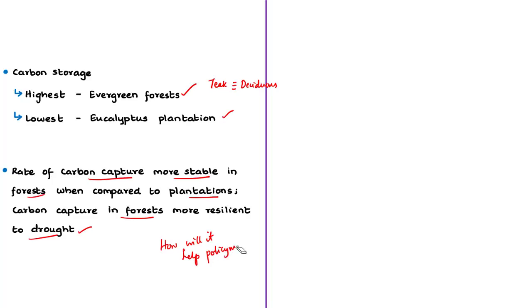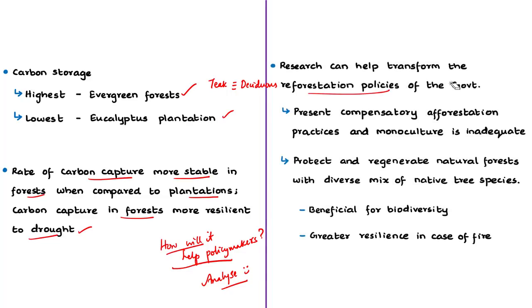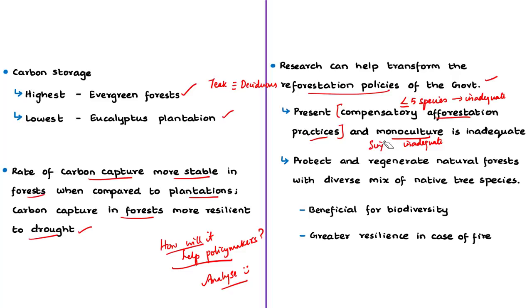This research study is important for policy makers. For example, as per currently available government data, over half of the compensatory afforestation plantations use no more than five species. Growing five or fewer plant species in compensatory afforestation plantations and practicing monoculture — cultivating only a single species of trees like teak or eucalyptus in a given area — are inadequate and will not increase biodiversity. This research study concluded that the rate of carbon capture in such plantations will not be stable.